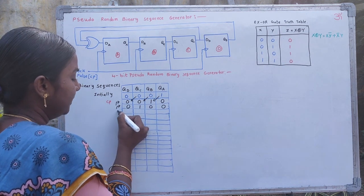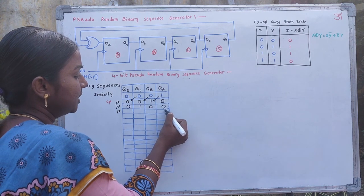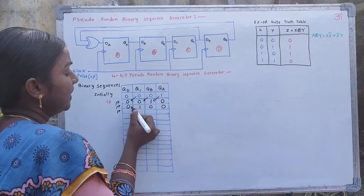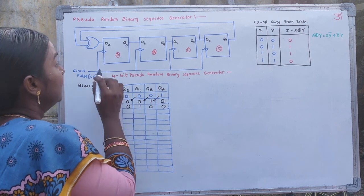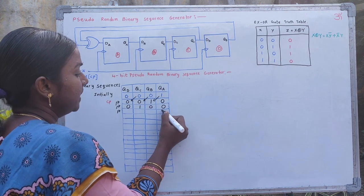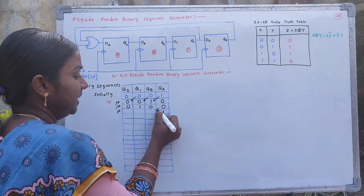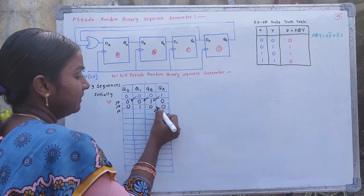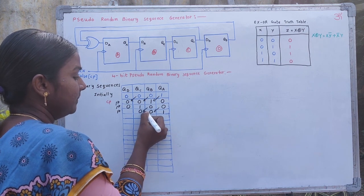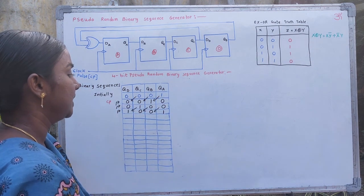After applying the third clock pulse, to generate QA, the previous bits QC and QD are 0, 1. When these bits are 0, 1, the exclusive OR gate generates output 1, so QA becomes 1. Based on the previous QA, QB will be 0. In this similar fashion, we may get all the binary states.